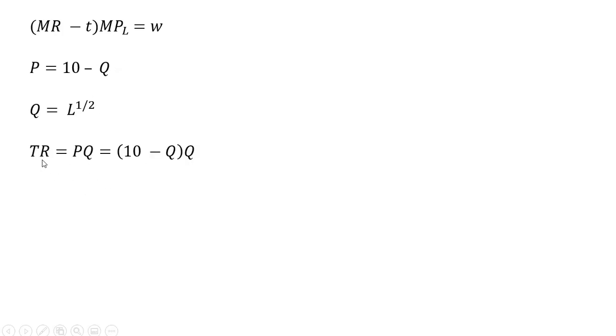Let's get marginal revenue. Total revenue is price times quantity. Price is 10 minus Q, and that's all multiplied by Q. Taking the derivative of total revenue, we get 10 minus 2Q.